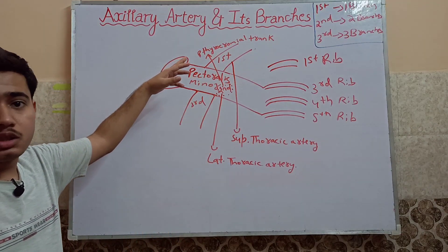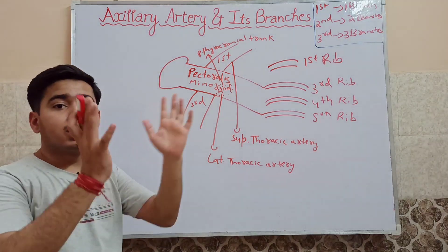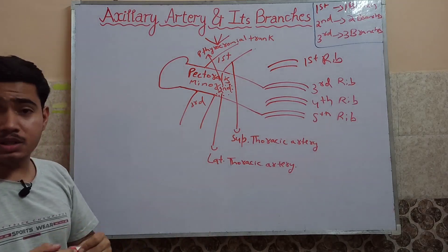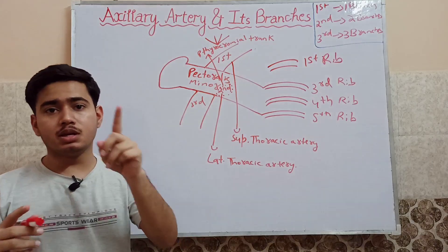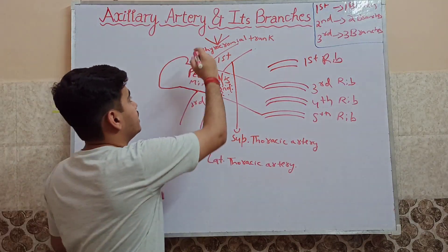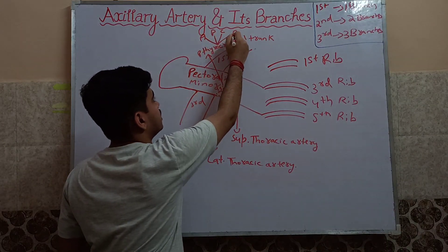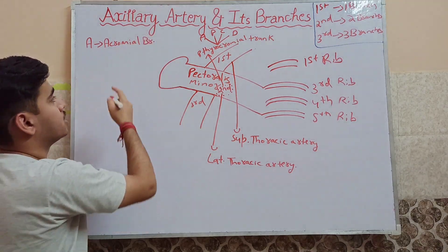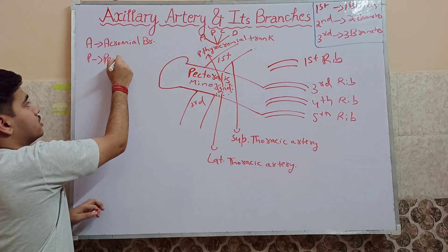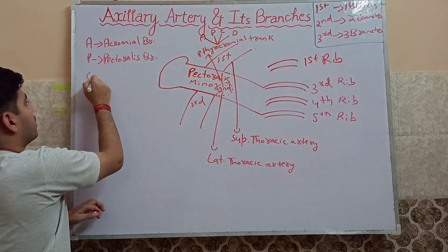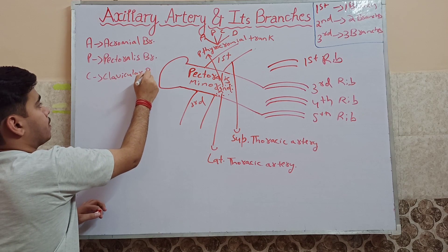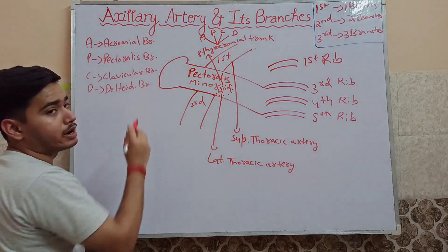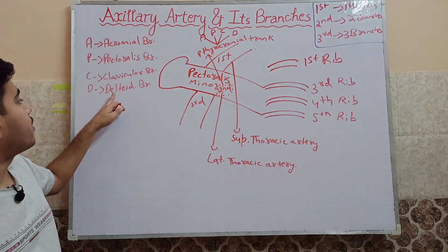The thoracoacromial trunk gives us sub-branches, which you can remember by the mnemonic APCD. A stands for acromial branch, P stands for pectoral branch, C stands for clavicular branch, and D stands for deltoid branch — supplying the deltoid muscle.